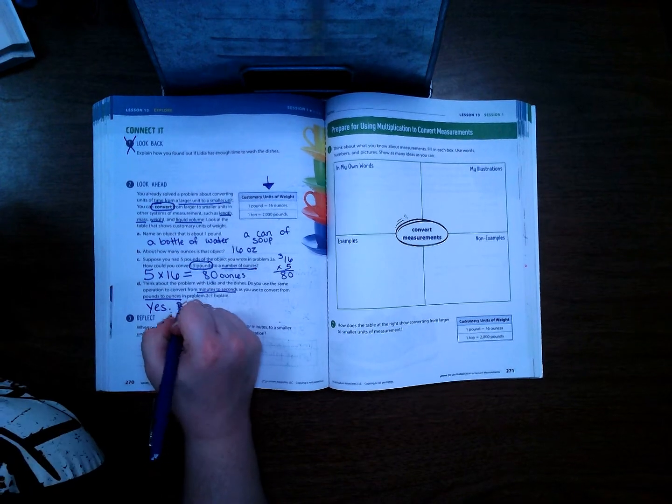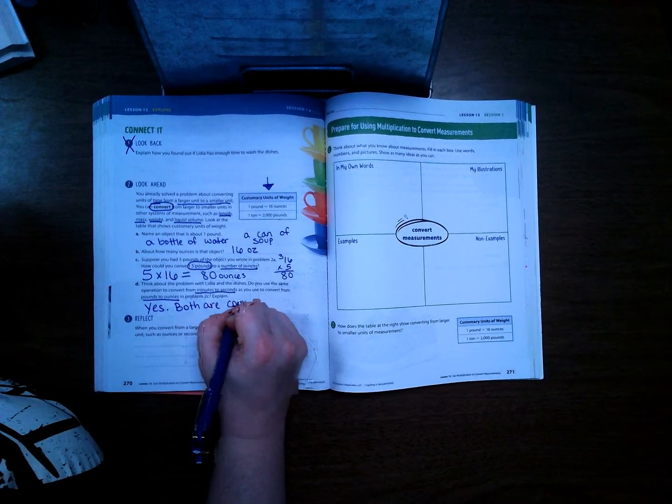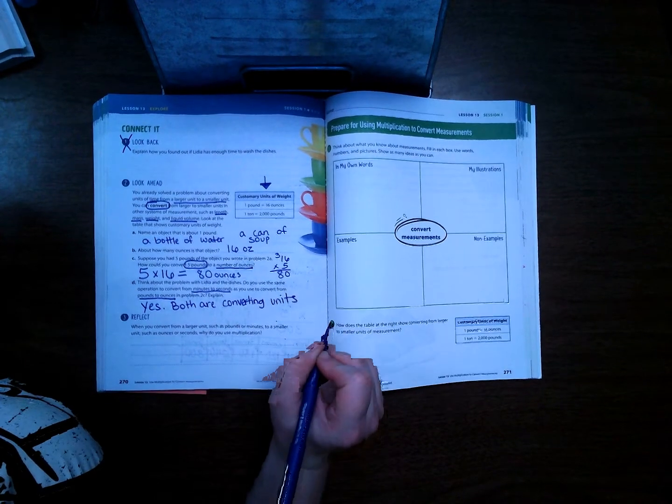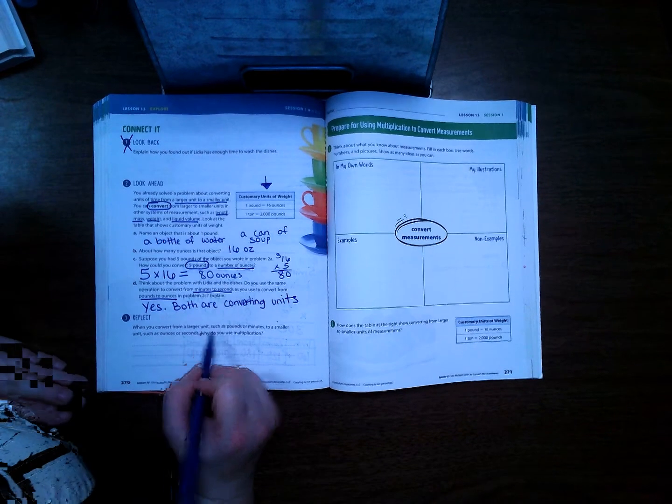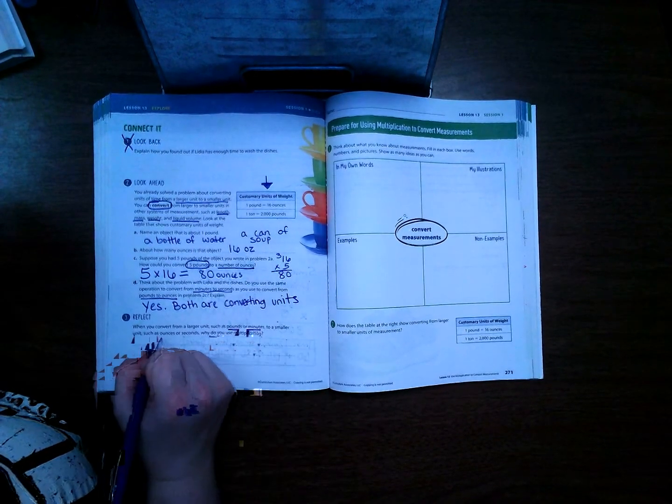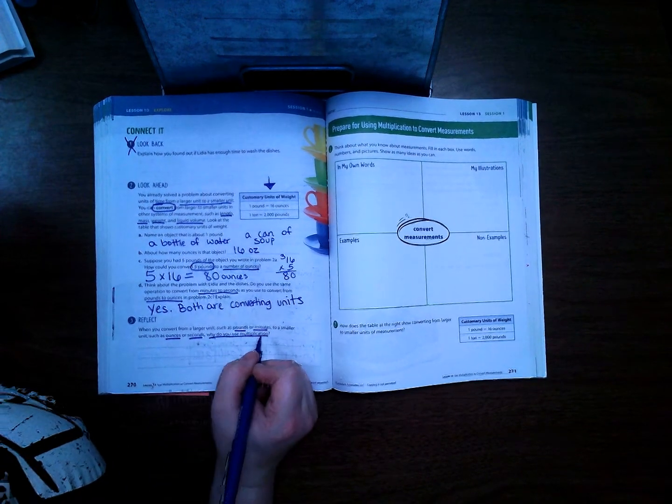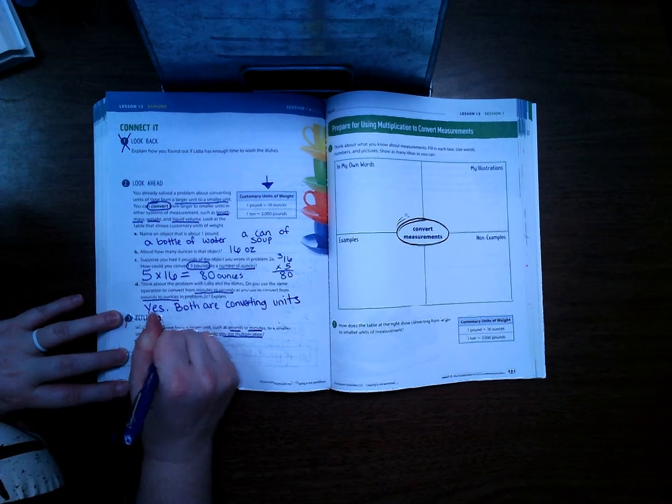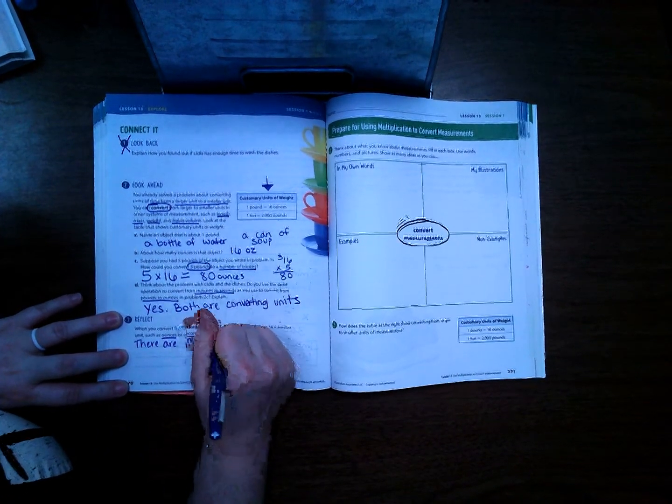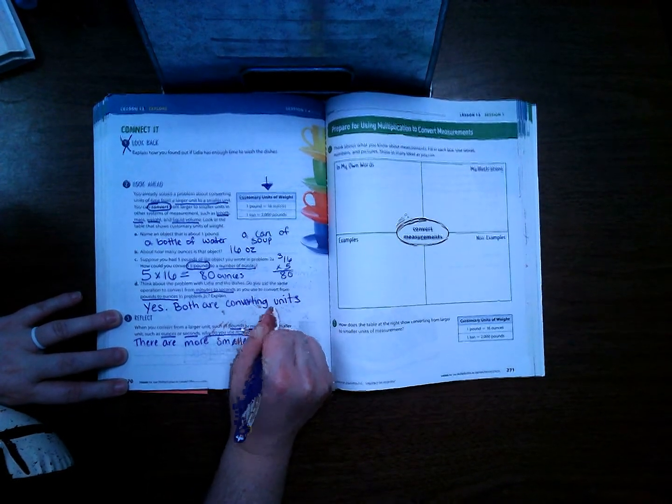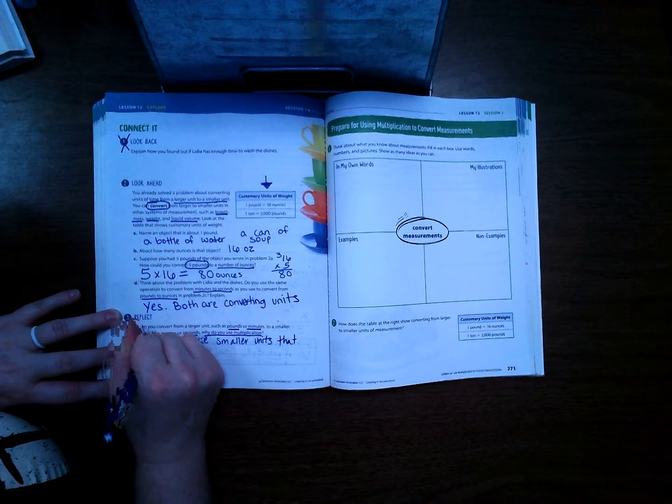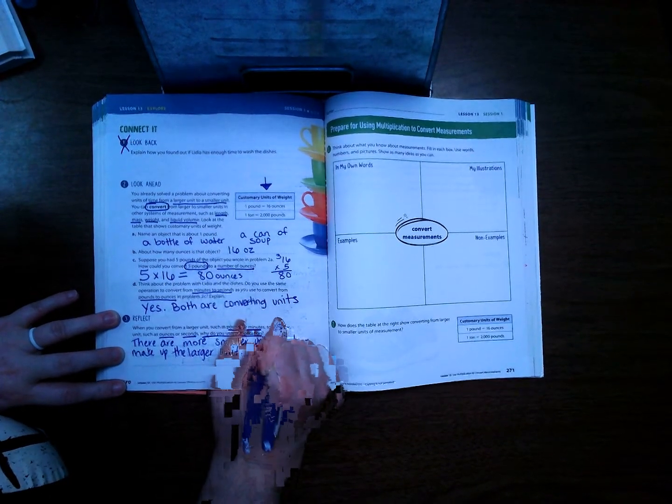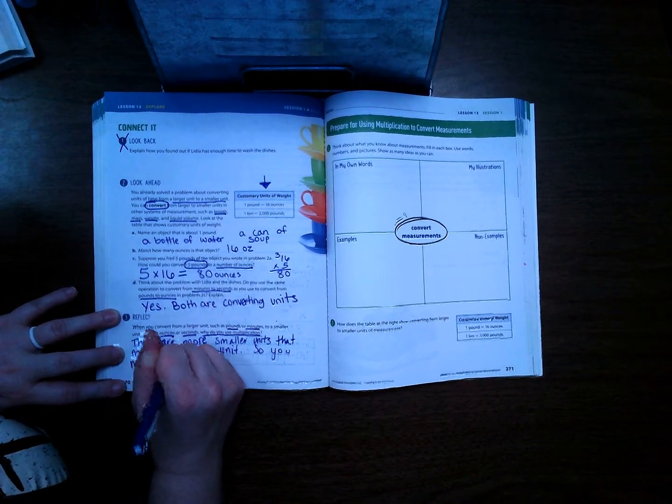Both of them are converting units. When you convert from a larger unit such as pounds or minutes to a smaller unit such as ounces or seconds, why do you use multiplication? Well, when you go from larger to smaller, there are more smaller units that make up the larger unit, so you must multiply.